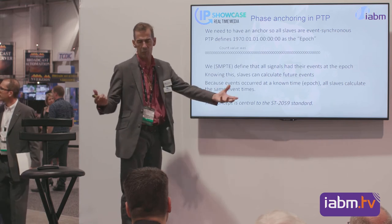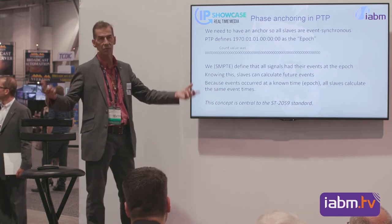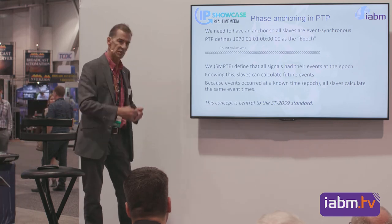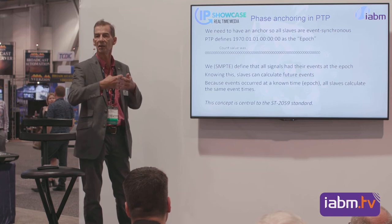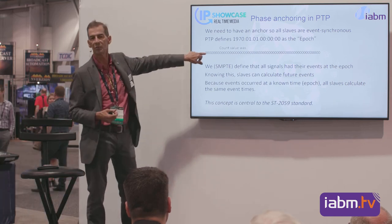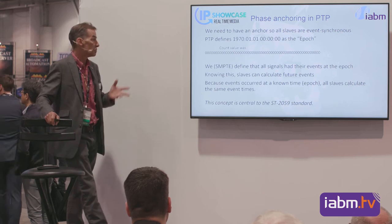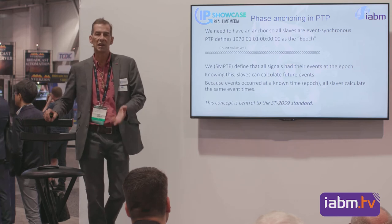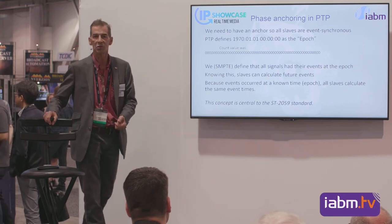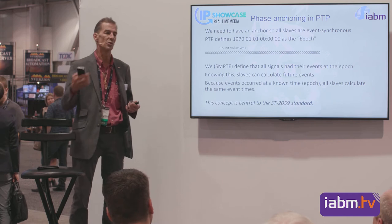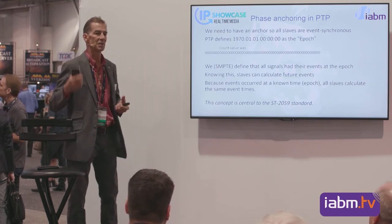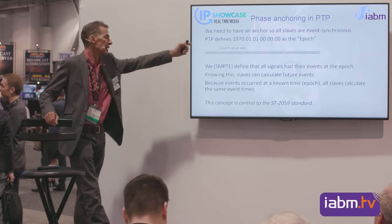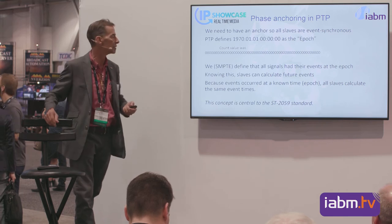This means I can have two PTP generators locked to GPS producing video, and even though they don't know about each other, the video phases they're outputting are identically aligned because they're both calculating from 1970. Your cell phone uses GPS — that's based on 1980 — and it still works really well. In fact, if we all hold up our phones and the minute changes, they'll all change at the same instant. PTP has this capability of epoch-anchoring something and allowing predictive generation in the future.